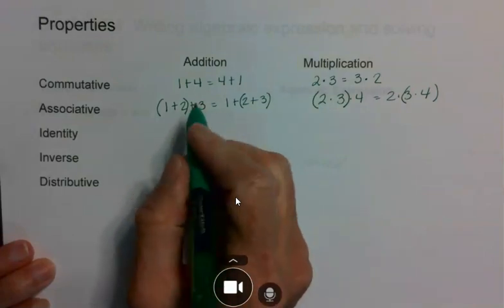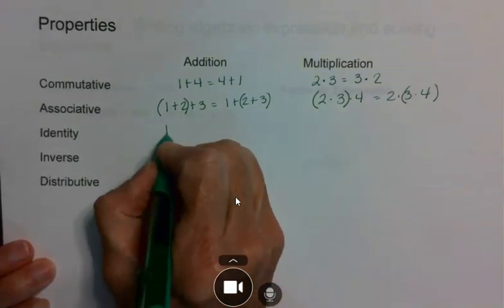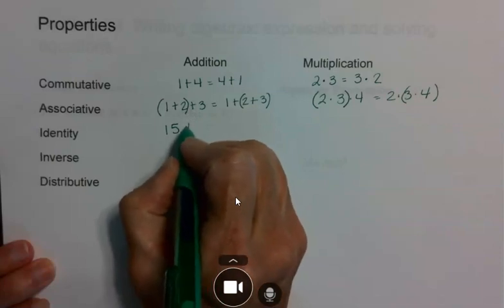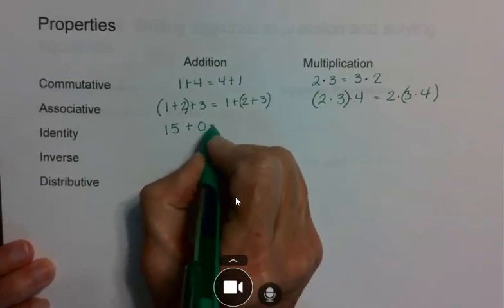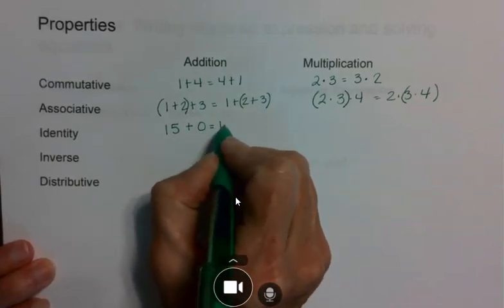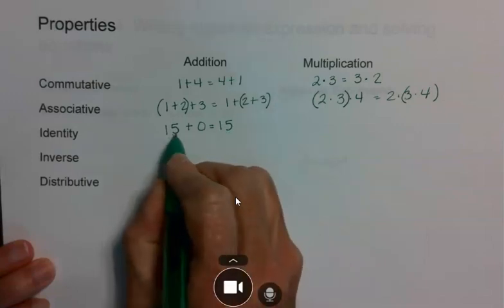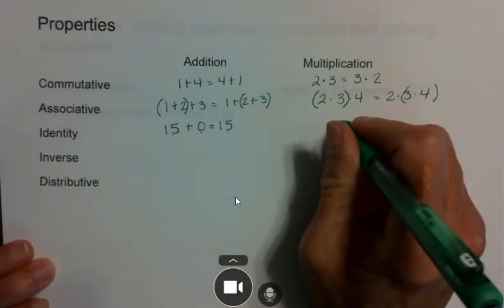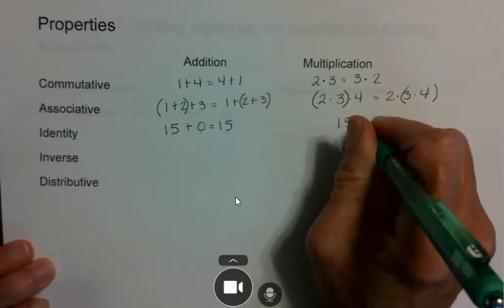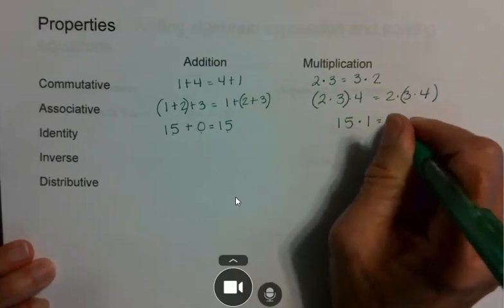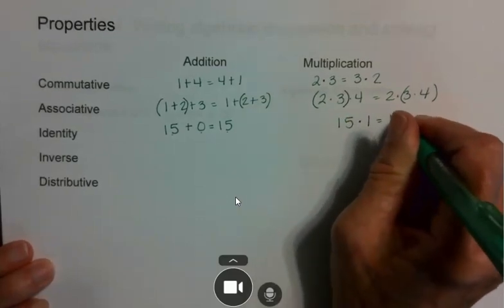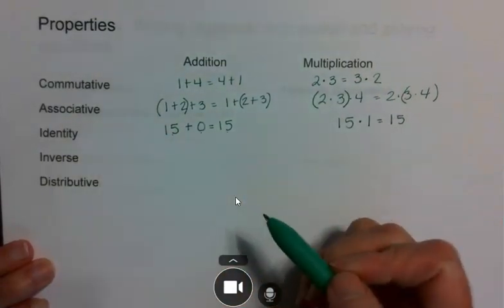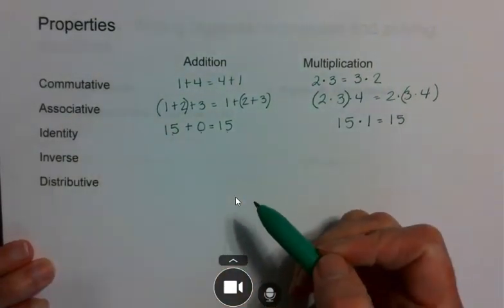Identity is all about keeping your original look. So if I have the number 15 and I want to add something without changing its identity, I have 15 plus 0 equals 15. If I want to multiply without changing its identity, I multiply by 1. Those are the addition and multiplication identity properties.